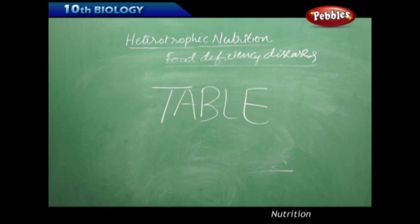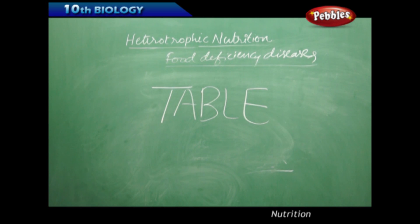B3 is niacin. Sources are kidney, liver, meat, egg, fish and oilseeds. The deficiency leads to pellagra, and the symptoms are dermatitis, diarrhea, loss of memory, and scaly skin.